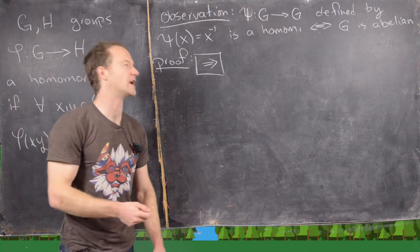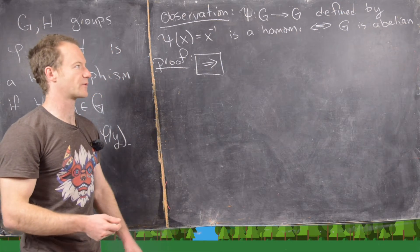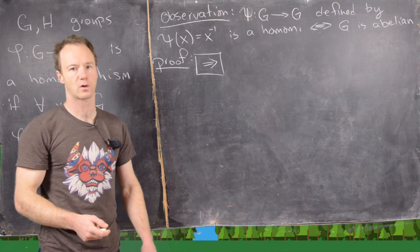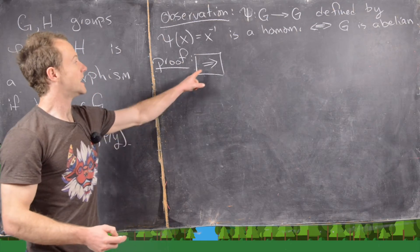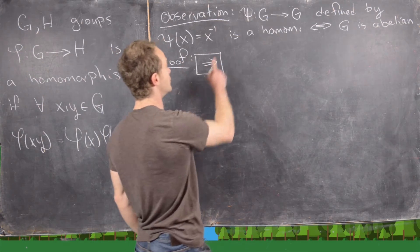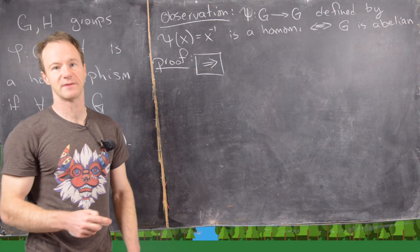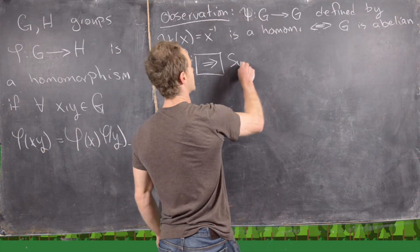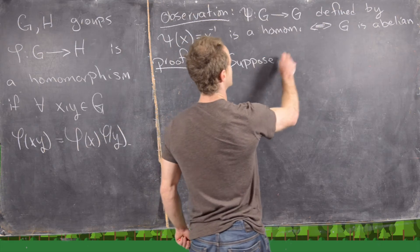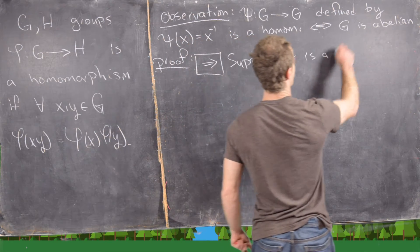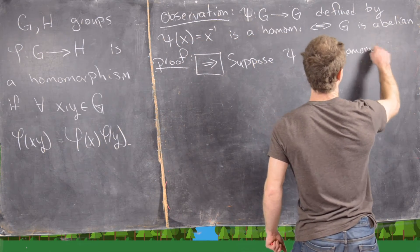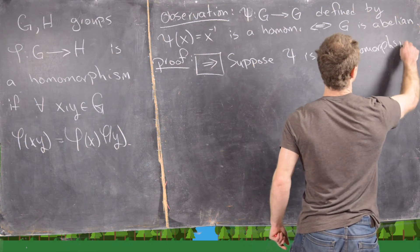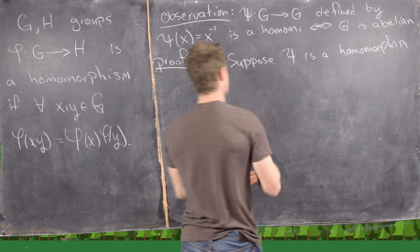Now we're ready to prove the other direction. We started with the reverse direction, now we're going to prove the forward direction. In other words, we want to assume that this thing is a homomorphism and then prove that it makes the group abelian. So let's go ahead and suppose that psi is a homomorphism.